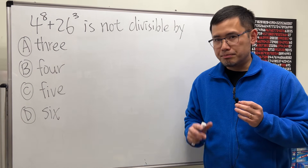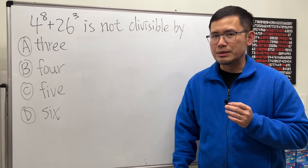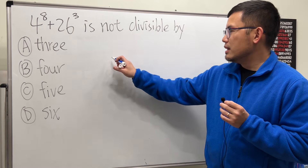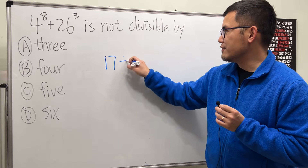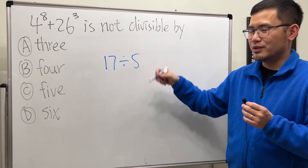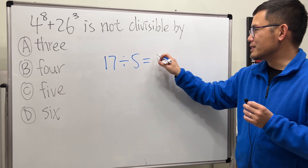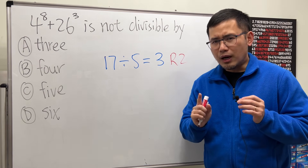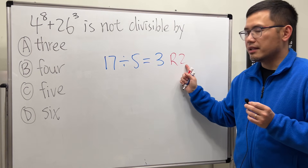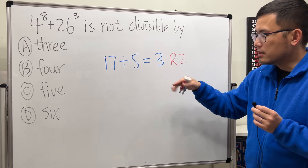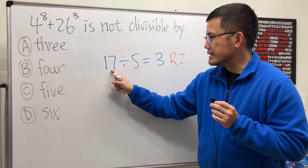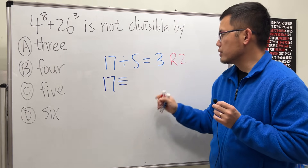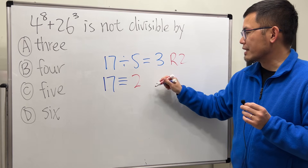For this kind of question, it's best to use modular arithmetic. Let me give you an example before we proceed. Let's say we are doing 17 divided by 5. Just do a long division — you end up with 3 remainder 2. For modular arithmetic, we are paying attention to the remainder. Based on this, we can say 17 is congruent to 2 mod 5.